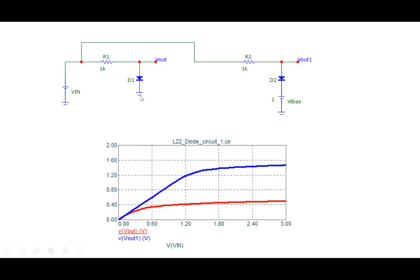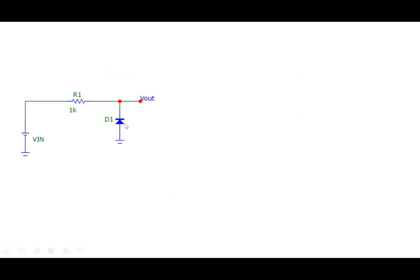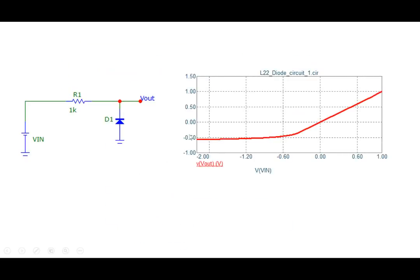If we reverse the polarity of the diode, the whole thing shifts. The saturation occurs in the negative direction, and in the positive direction the output voltage follows linearly with the input voltage, because the diode is either not conducting very well or is reverse biased.